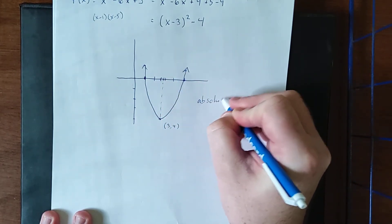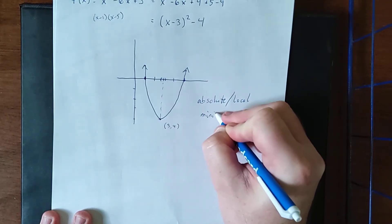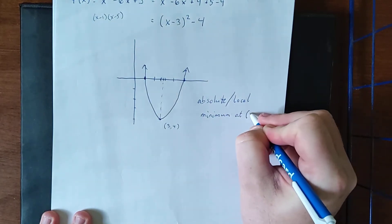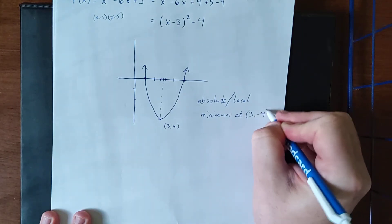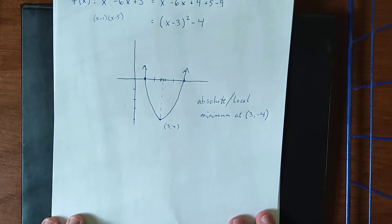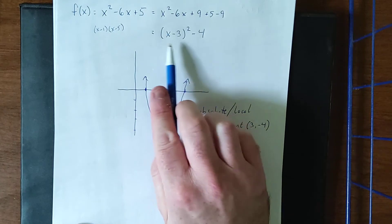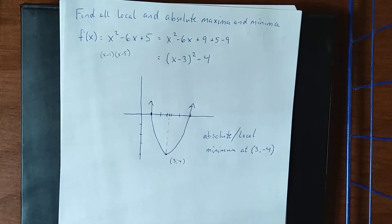So the absolute and local minimum occurs at the ordered pair (3, -4). No idea why I had that labeled as positive 4. But yeah, (3, -4) for this absolute and local minimum. Now again, we were able to get this through the algebraic technique of noticing that we had a quadratic function and applying techniques of our old algebra classes.